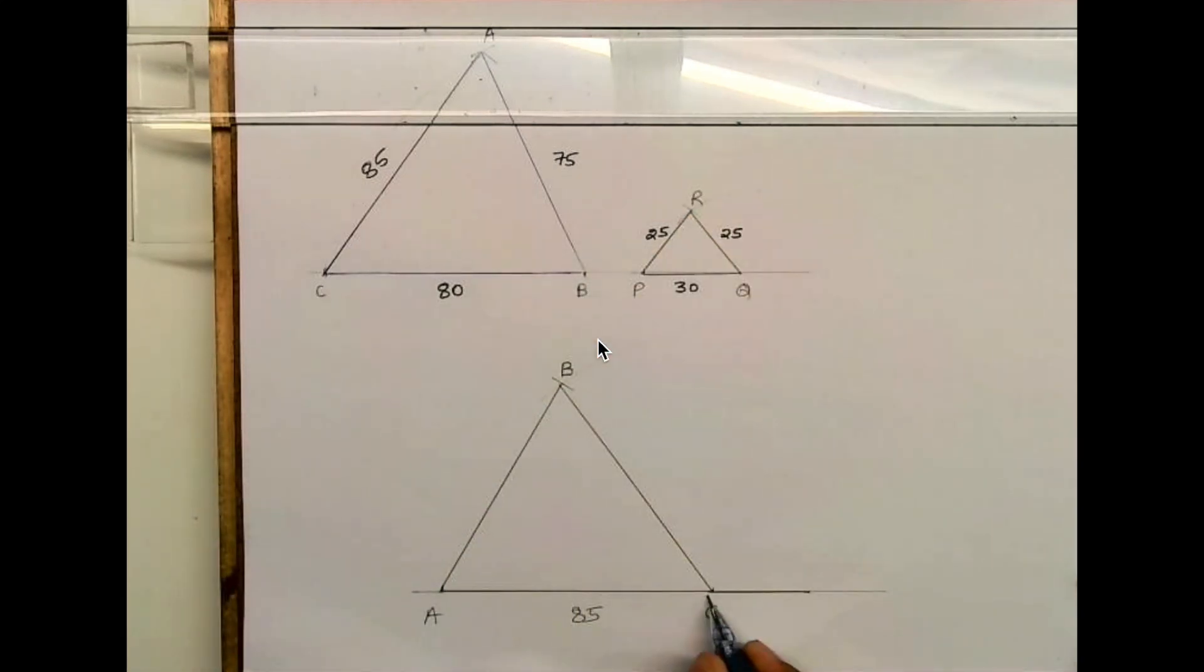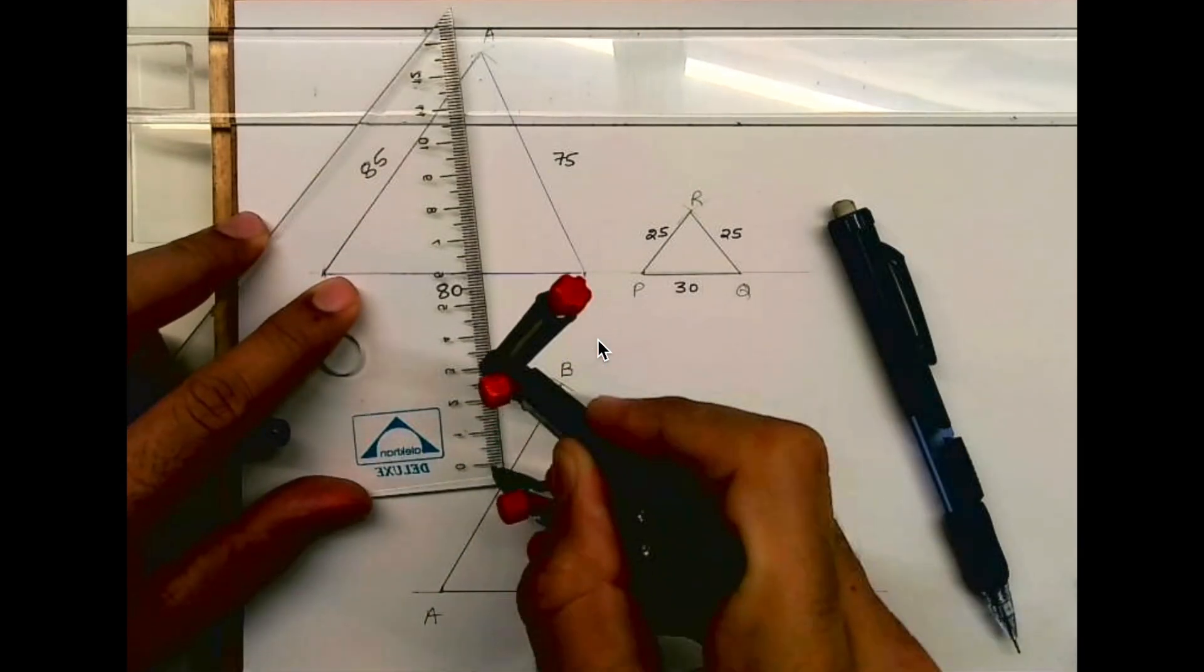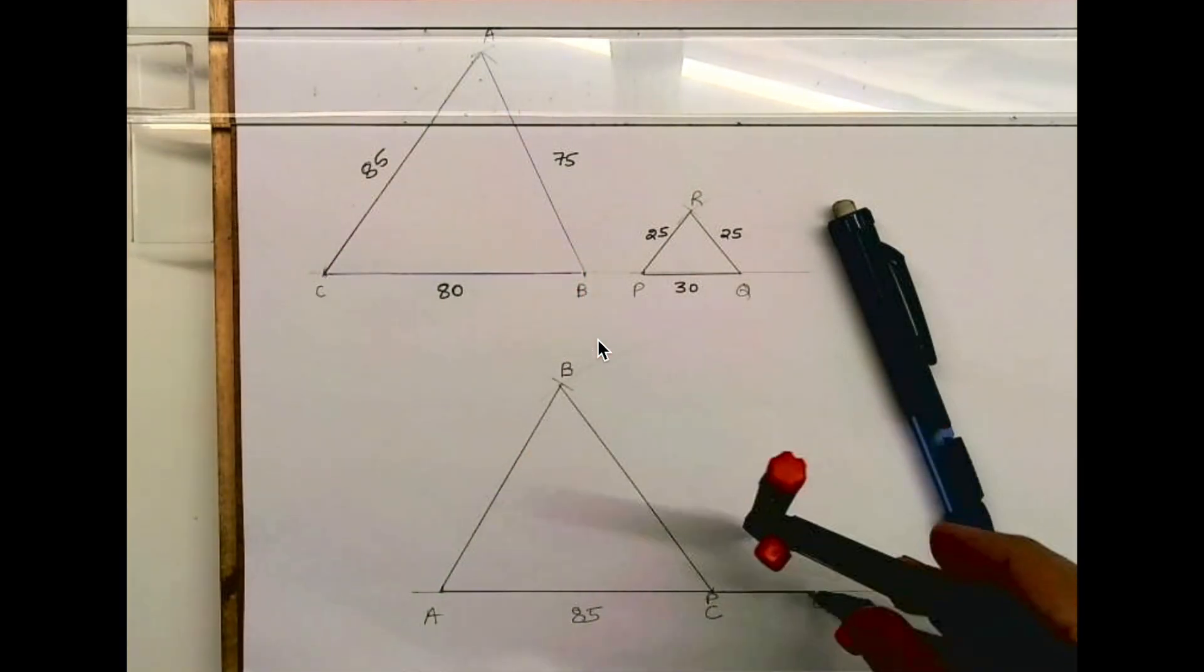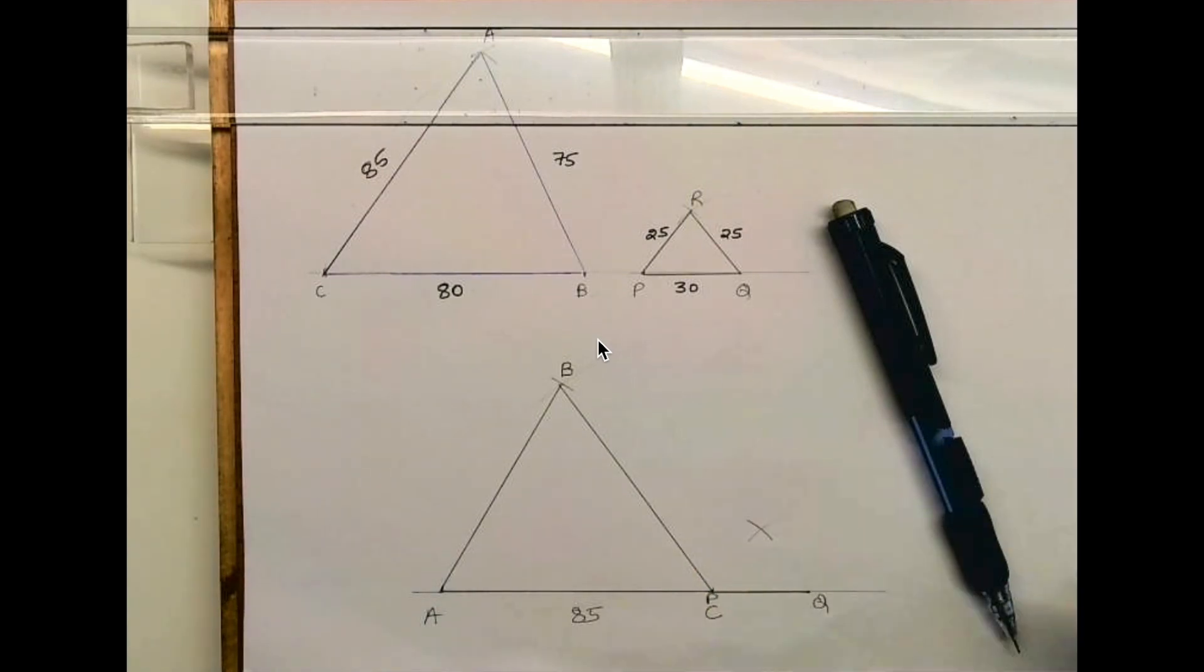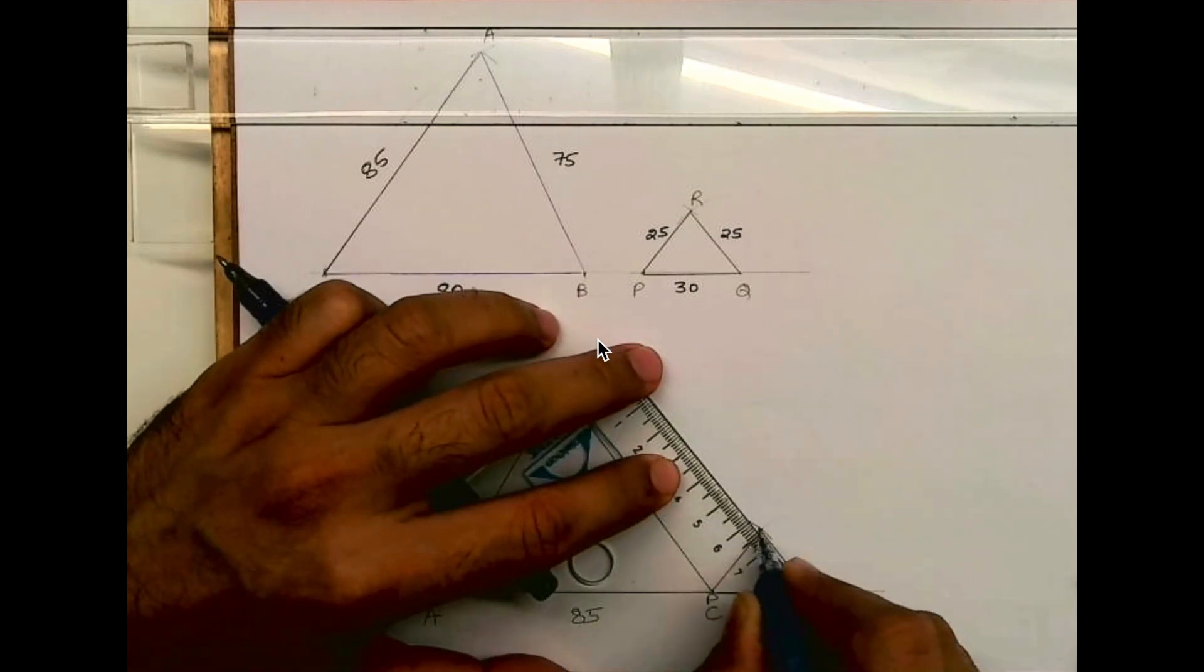Let's say triangle PQR. I will join in such a fashion that point C and point P are the same. So now we have two triangles next to each other with one common point.